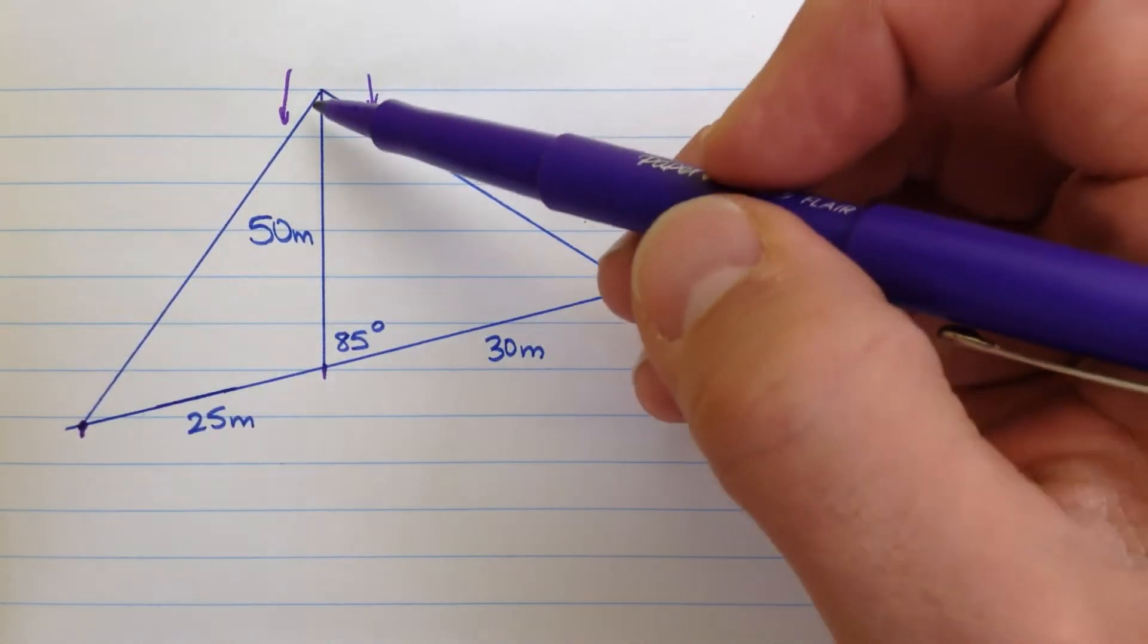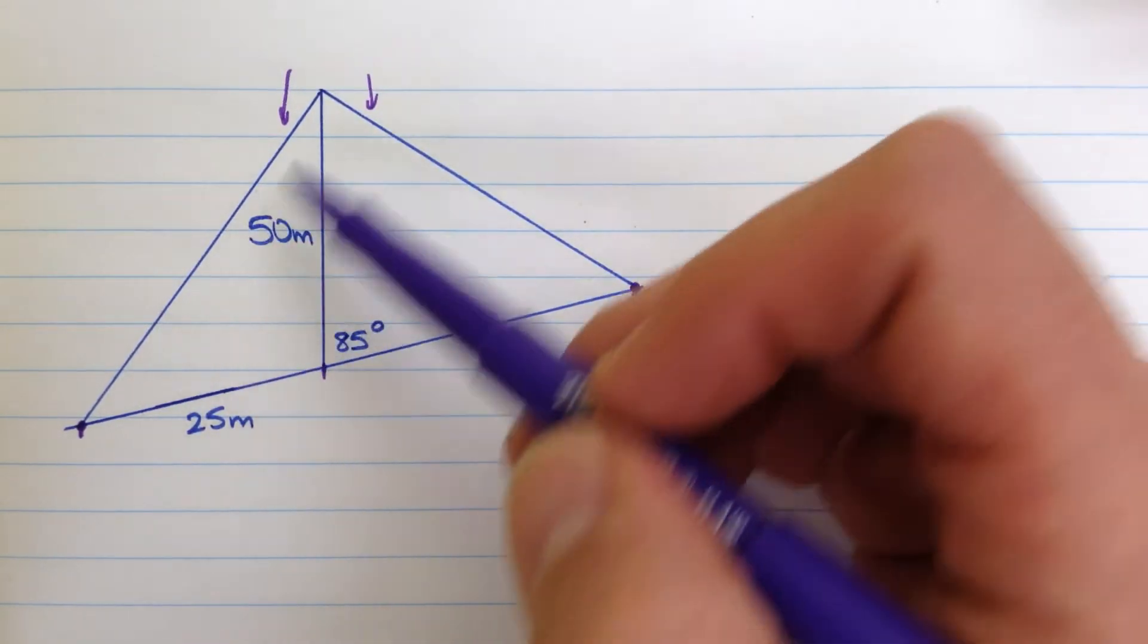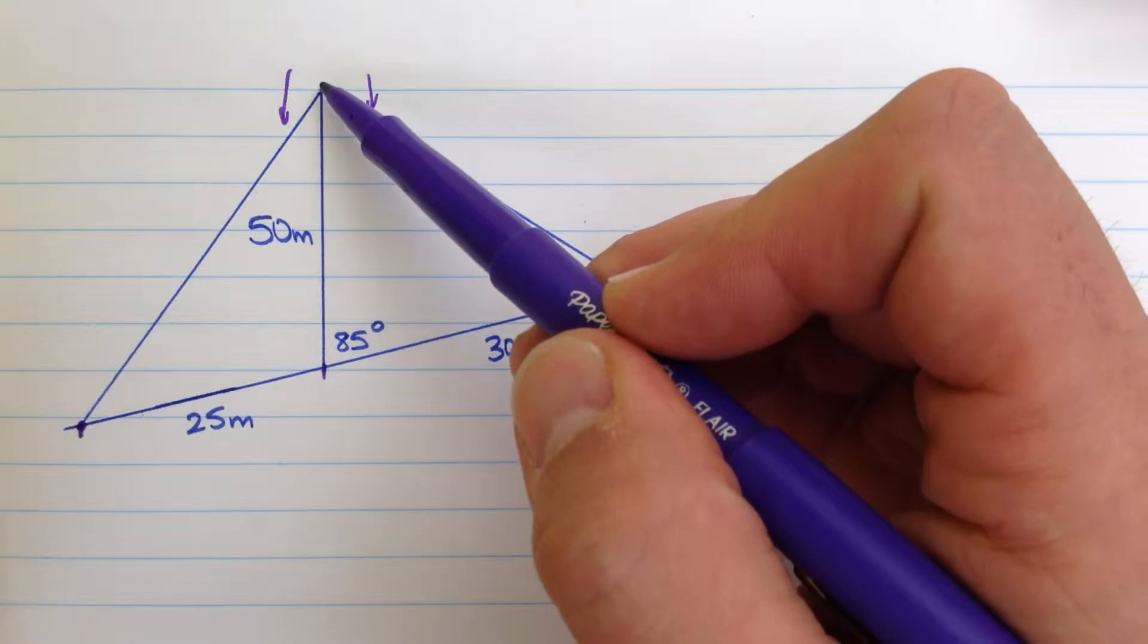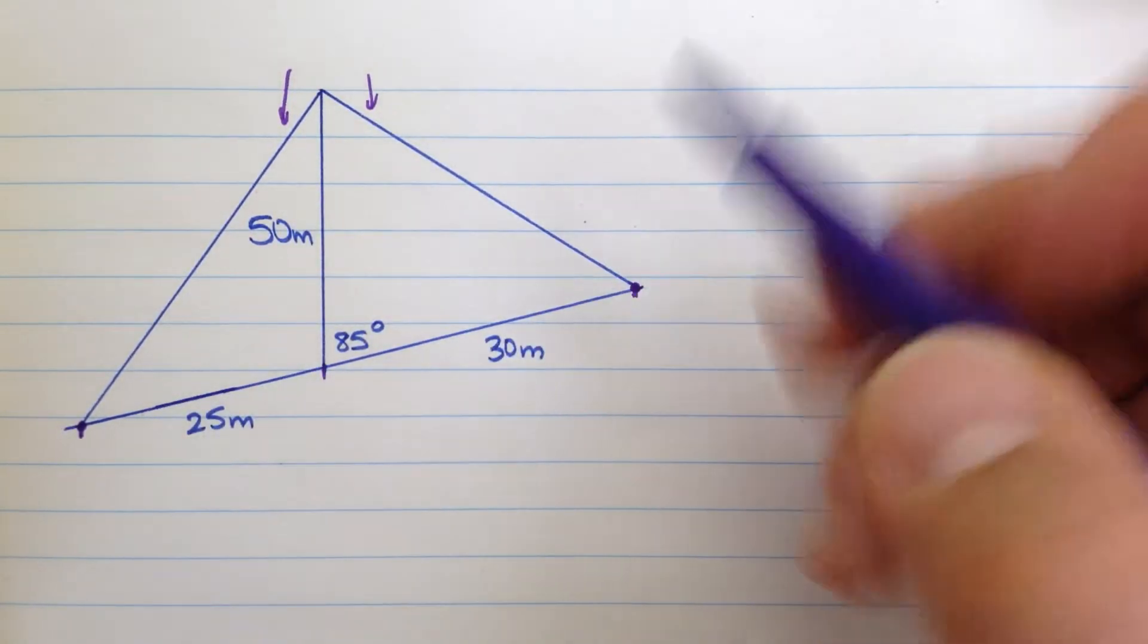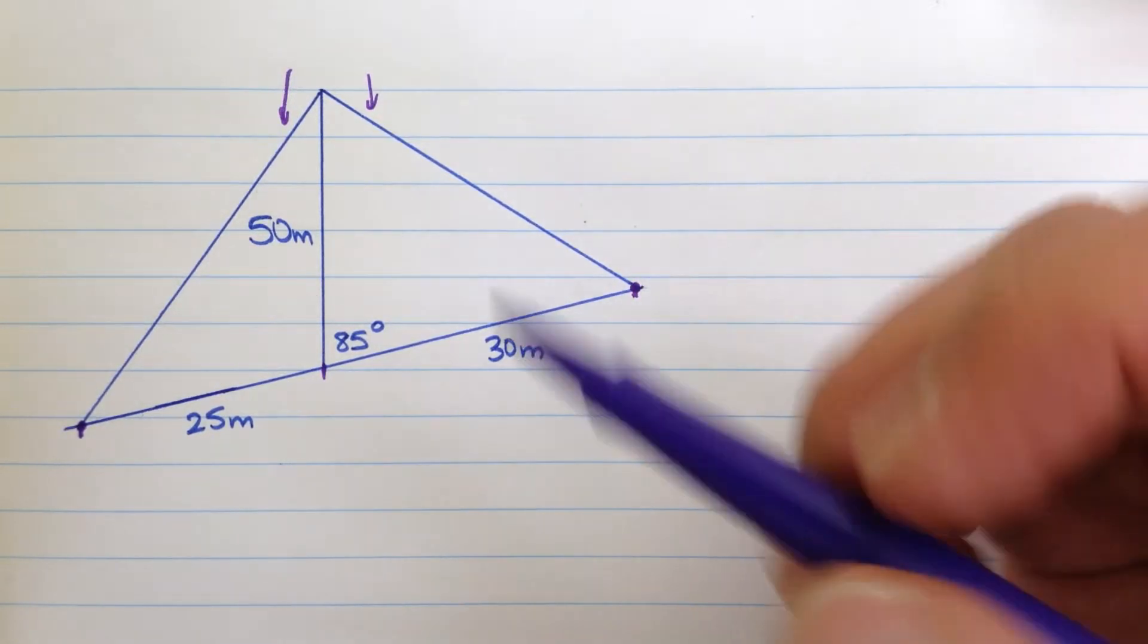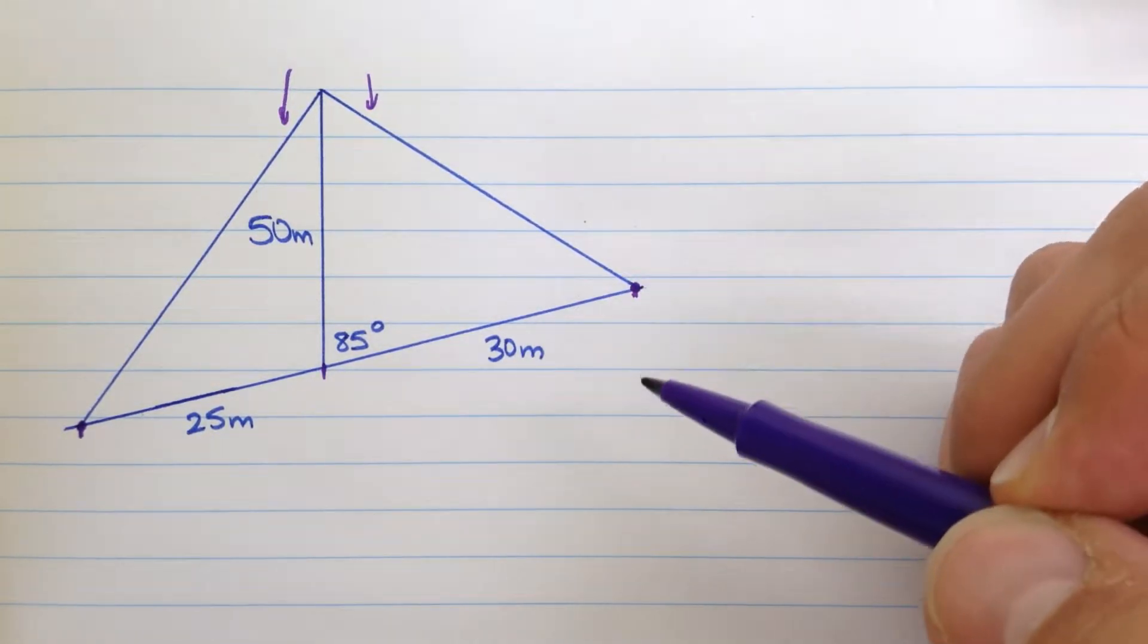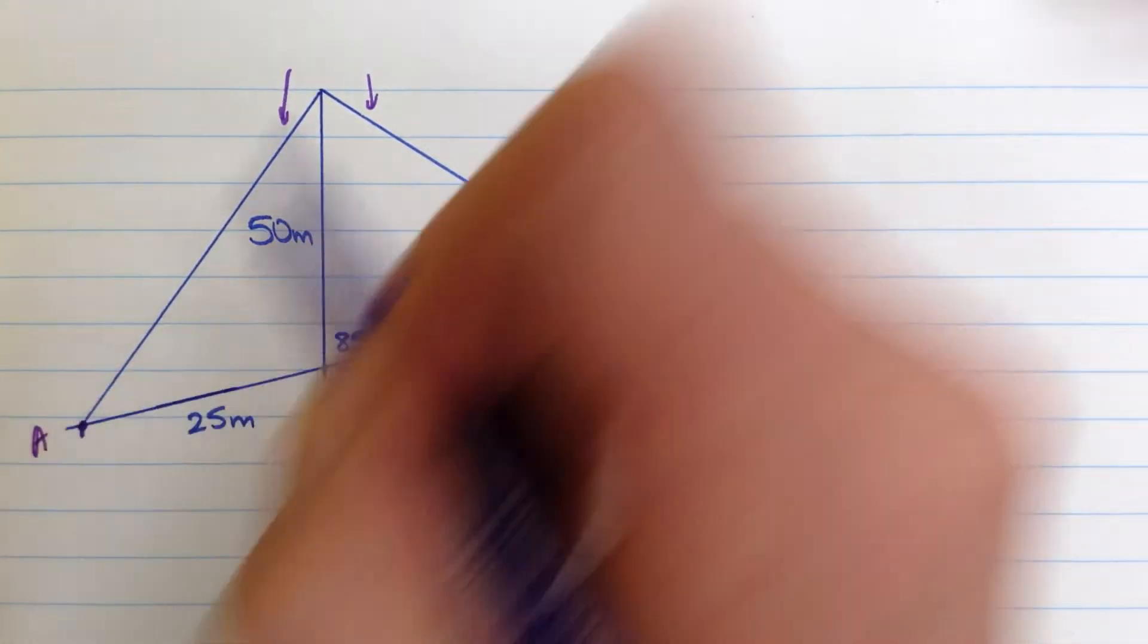And so the question is how long are these wires? If I have to bring a spool of wire to attach to this tower as a guy wire, how much wire am I going to need? How long is each one? So to solve this, we're going to use the cosine law. And there's actually a bunch of ways to solve this question if you know some things about it. But we're going to use cosine law today.